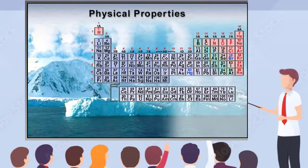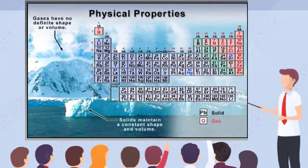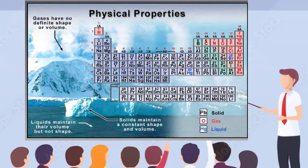By now, you have probably noticed several color variations in the periodic table. At room temperature and atmospheric pressure, the elements depicted in black text are solids, those in pink are gases, and mercury and bromine depicted in blue are liquids. The color of each element tag background is also significant. The elements colored in blue are metals, the greenish elements to the right are semi-metals or metalloids, and the pink element tags at the far right are non-metals.